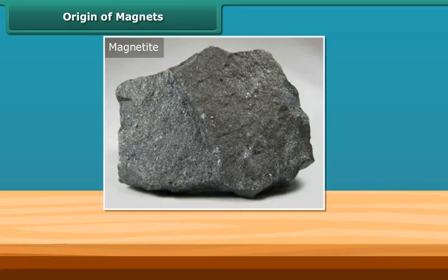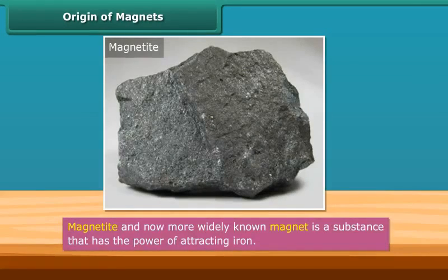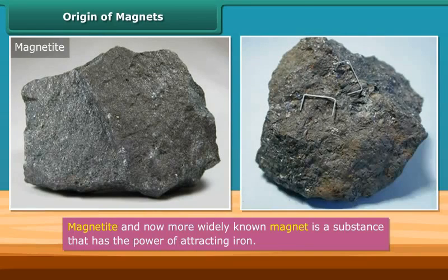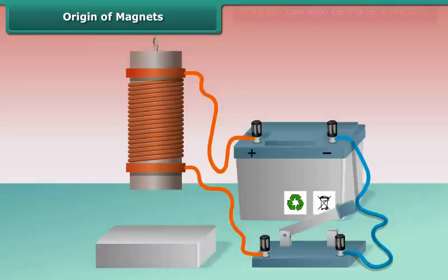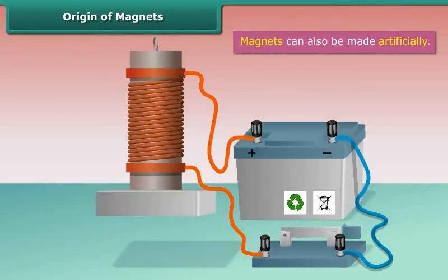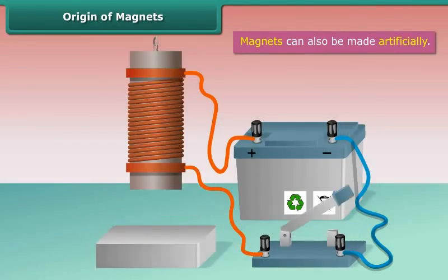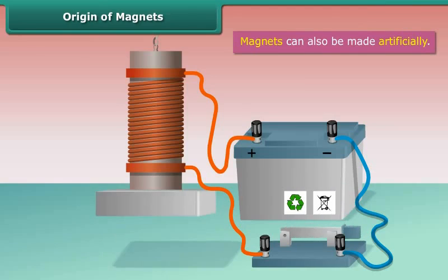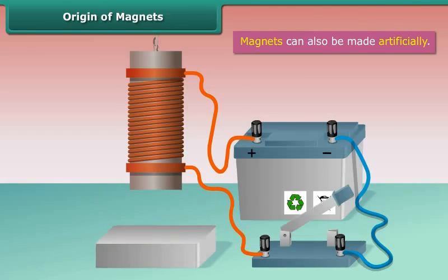Magnetite is a natural magnet and contains iron. In the later days, this was more widely known as a magnet. A magnet is a substance that has the power of attracting iron. Magnets can also be made artificially. However, the process of making artificial magnets is a recent discovery.